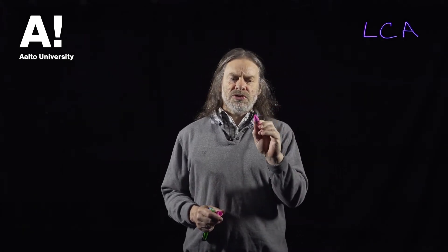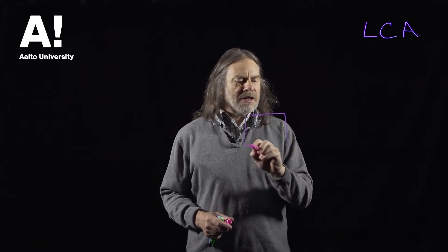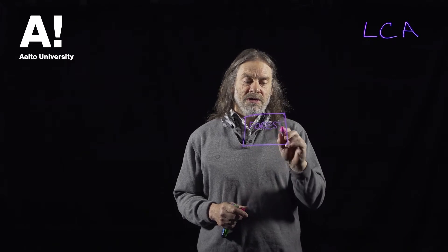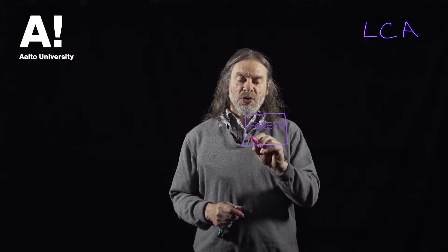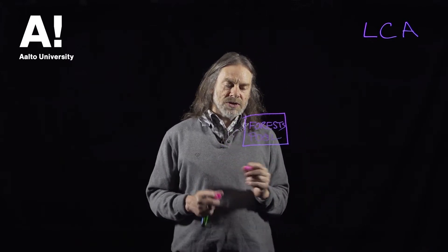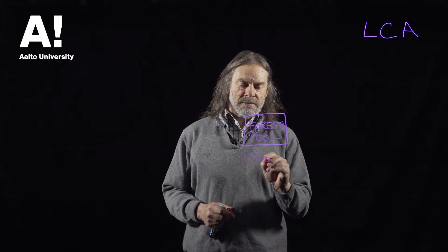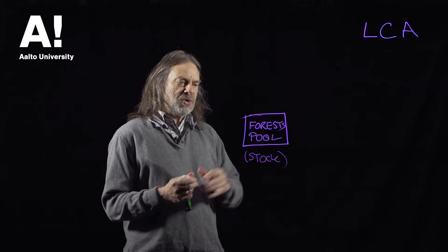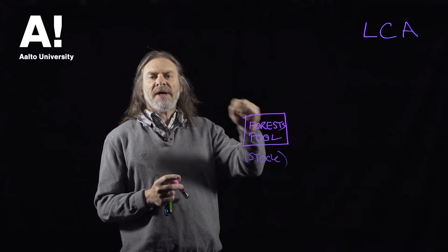We're looking at the carbon cycle and rather than draw trees and forests and all that sort of thing, we draw boxes. We call this box 'forests' and that's referred to as a pool — we can also call it a stock. Forests: pool and stock. What this little box represents is a system boundary.